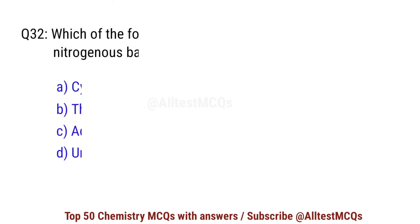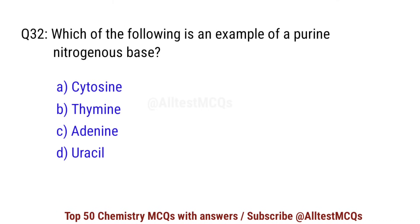Question number 32. Which of the following is an example of a purine nitrogenous base? Correct option is C: adenine.